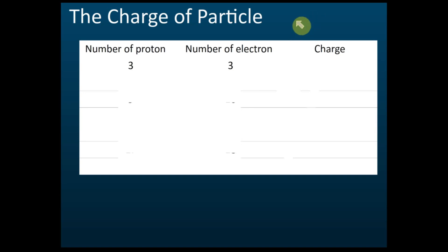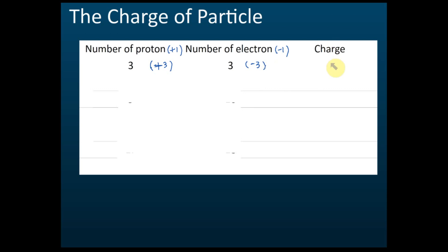The charge of particles depends on the number of protons and electrons. The charge of a proton is positive one and the charge of an electron is negative one. For example, if an atom has three protons and three electrons, the charge of the three protons is positive three, and the charge of the three electrons is negative three. As a result, the total charge of the atom becomes zero: positive three plus negative three equals zero.